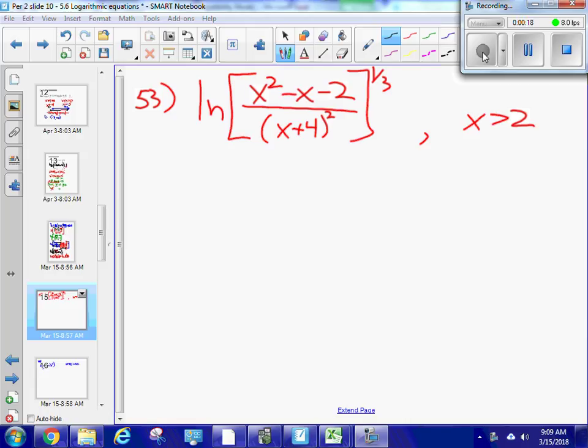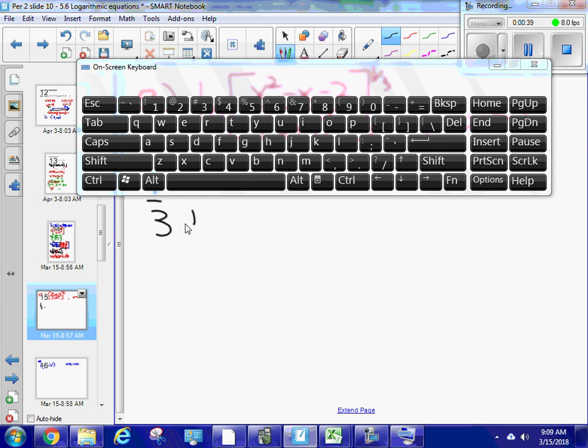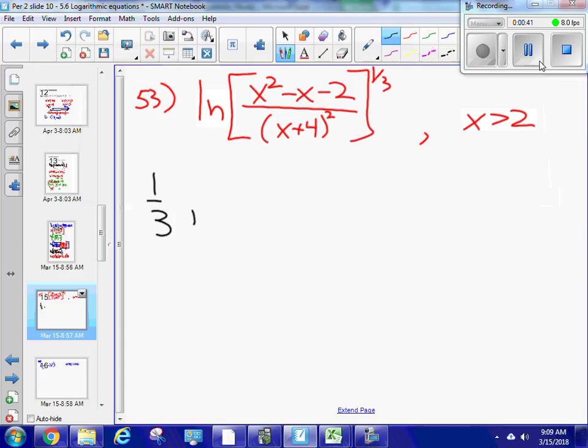So if I'm going to expand this here, the first thing I'm going to do, because I want to work from the outside in, is I've got to get rid of this power thing. All right, so I'm going to use the third property to get rid of that, and I'm going to go ln, I'm not going to go ln, I'm going to go one-third.